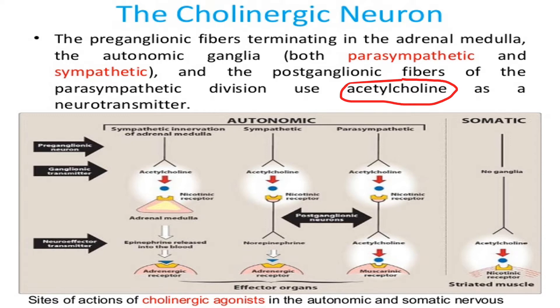For the somatic pathway, since it has no ganglia, it directly proceeds to striated or skeletal muscle, where we have a nicotinic receptor.